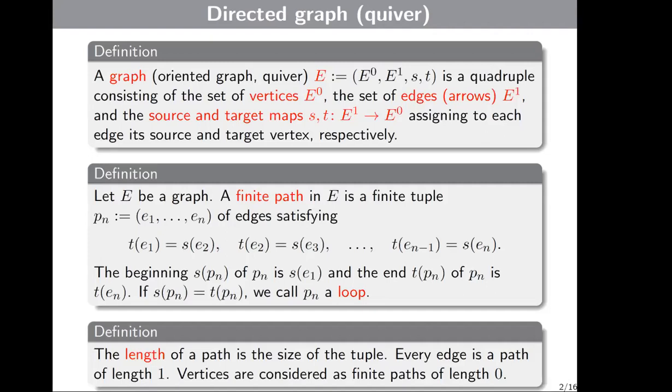The next definition is the definition of the length of a path. The length of a path is the size of the tuple. Every edge is a path of length 1, and we also consider vertices as finite paths of length 0.